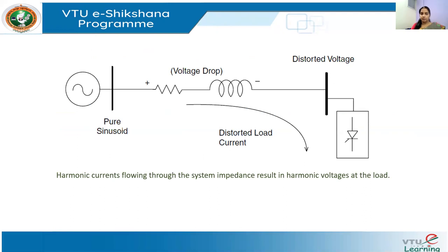Consider a system where the supply is a pure sine wave, connected through a linear power delivery system to a non-linear load — represented here as a power electronic converter in the shunt element. This figure shows how the current flowing through the system impedance results in both voltage distortion and current distortion. There is distorted voltage appearing on the load side.